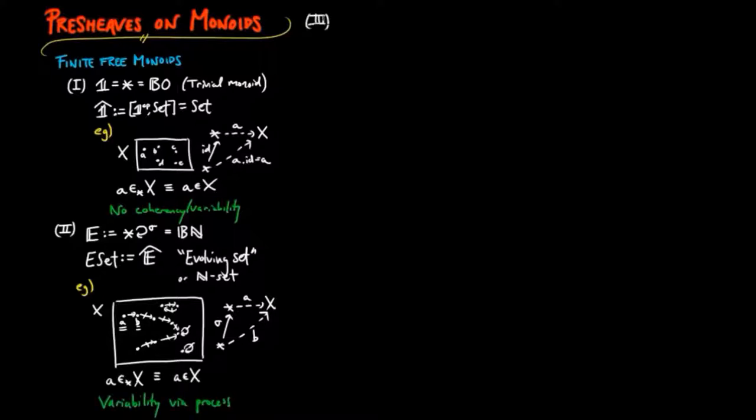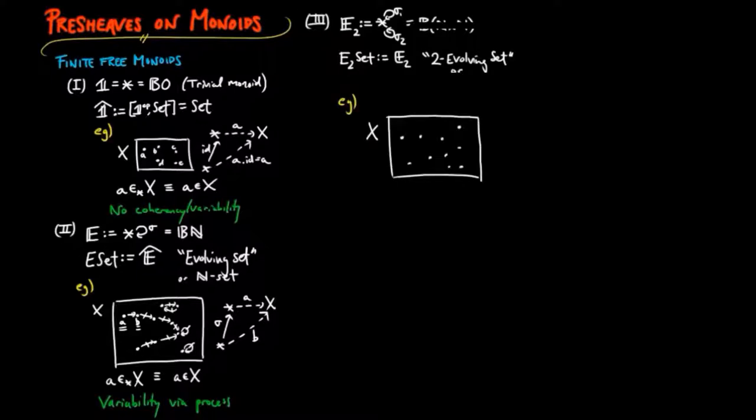For the third example, set E2 to be the category freely generated by two non-identity morphisms. The category of pre-sheaves in this case we call the category of two evolving sets. So if X is a container of two evolving sets, each figure has two different processes which produce the next stage.